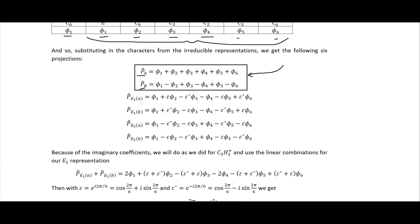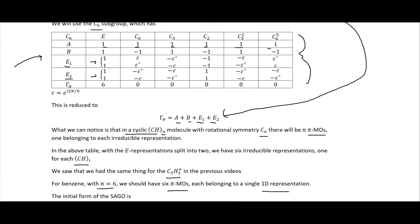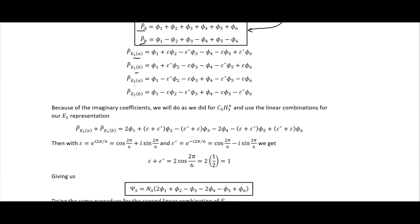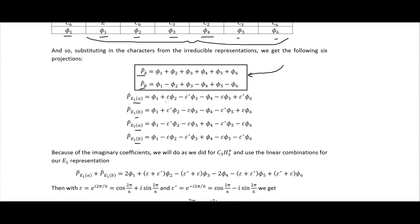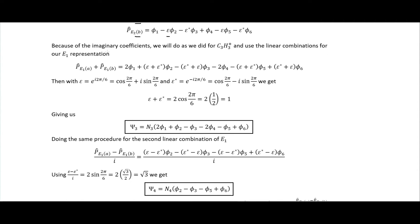But for these, the E1, which I've labeled E1a and E1b for this row up here and then this row down here, and then the E2a and E2b here, for those we see that we actually have these complex characters on them. And so we will use the second method that I showed two videos ago. So because of the imaginary coefficients, we will do like I said for the C3H3 plus, use the linear combinations of our E1 representation. So the E1a and E1b, which gives us the 2 phi, then the epsilon plus epsilon star, epsilon epsilon, or epsilon star plus epsilon, the epsilon plus epsilon star, the epsilon star plus epsilon here. And so we have the epsilon is equal to this e to the i 2 pi over 6, which using the Euler identity is the cosine of 2 pi over 6 plus i sine of 2 pi over 6, where the epsilon star is just the minus of that.